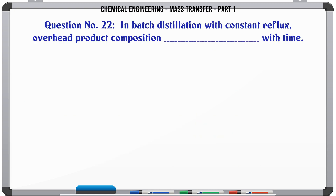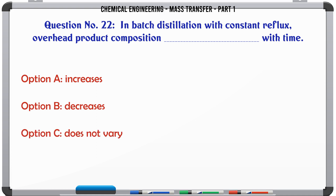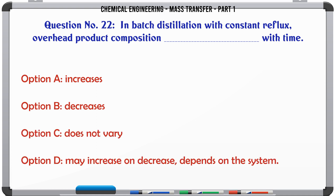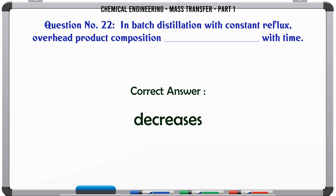In batch distillation with constant reflux, overhead product composition [changes] with time. A. Increases. B. Decreases. C. Does not vary. D. May increase or decrease, depends on the system. The correct answer is Decreases.